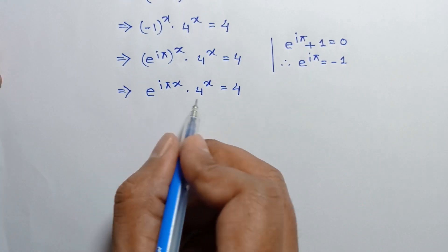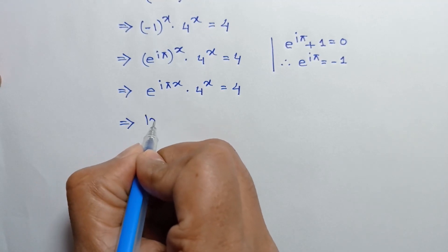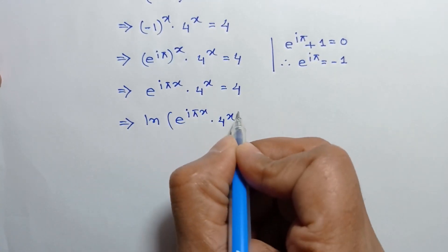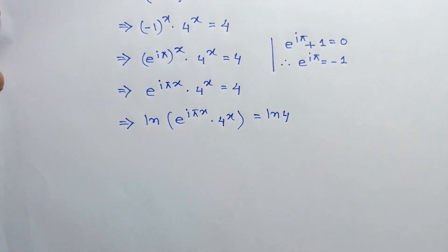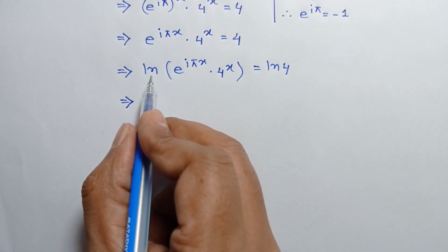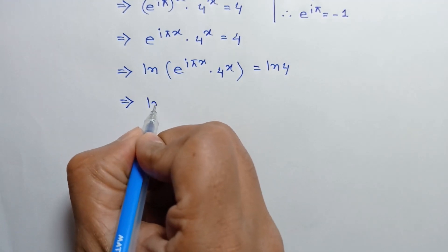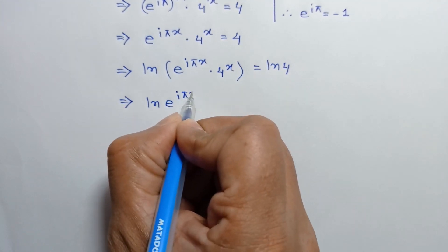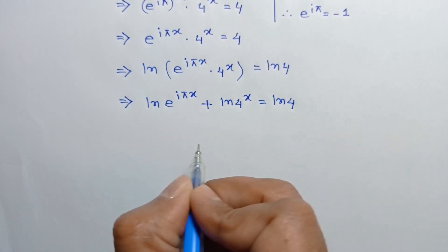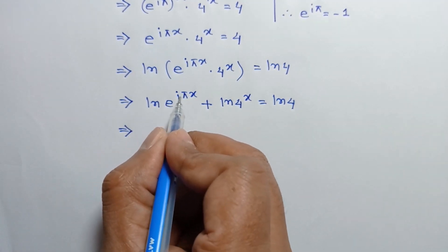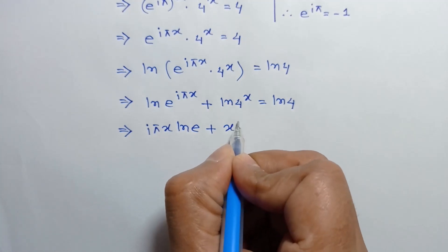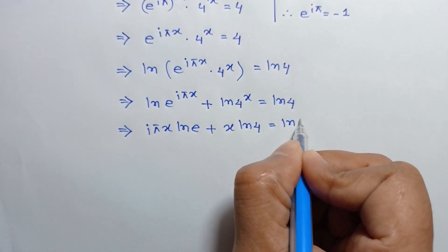Now, taking ln to both sides we can write: ln of e to the power i pi x times 4 to the power x is equal to ln of 4. This gives ln of e to the power i pi x plus ln of 4 to the power x is equal to ln 4, or this can be written as i pi x times ln of e plus x ln of 4 is equal to ln of 4.